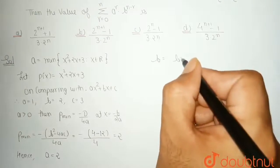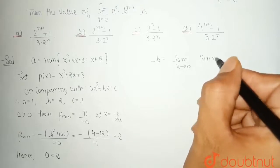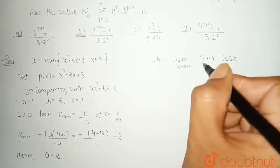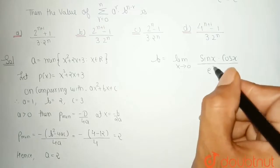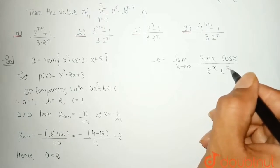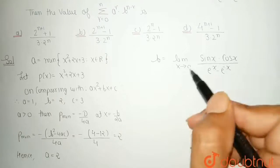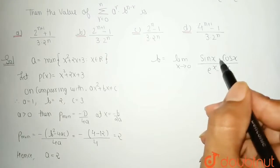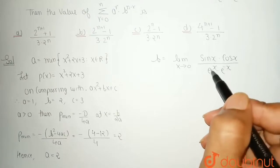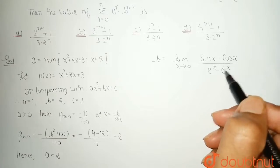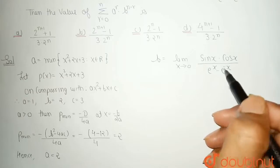b is equal to the limit as x tends to 0 of sin x · cos x divided by (e^x − e^(−x)). Before solving this limit, first check the form: at x = 0, sin 0 = 0, so the numerator is 0; and e^0 − e^0 = 1 − 1 = 0. So it is a 0/0 indeterminate form.